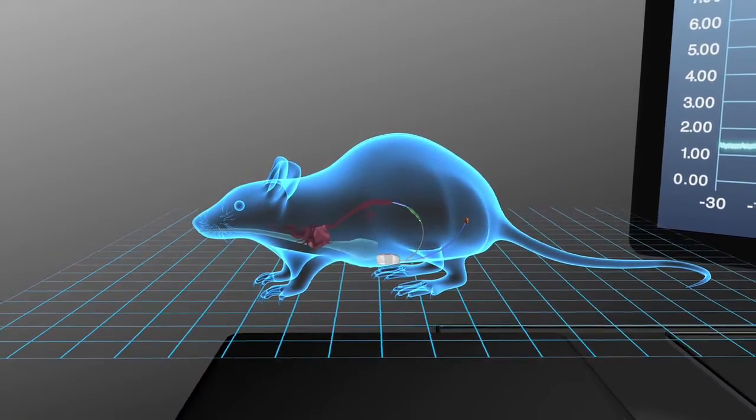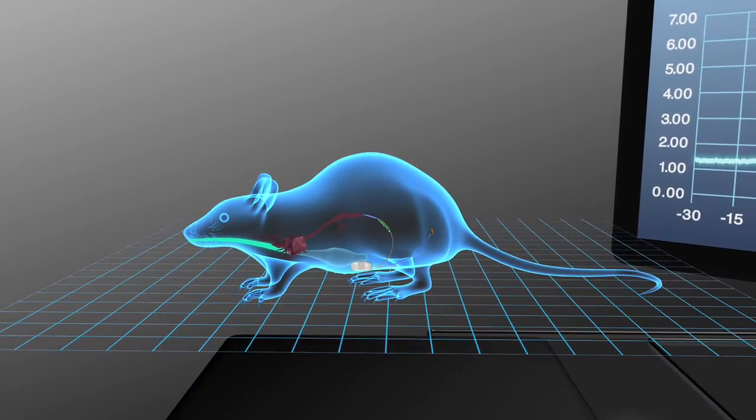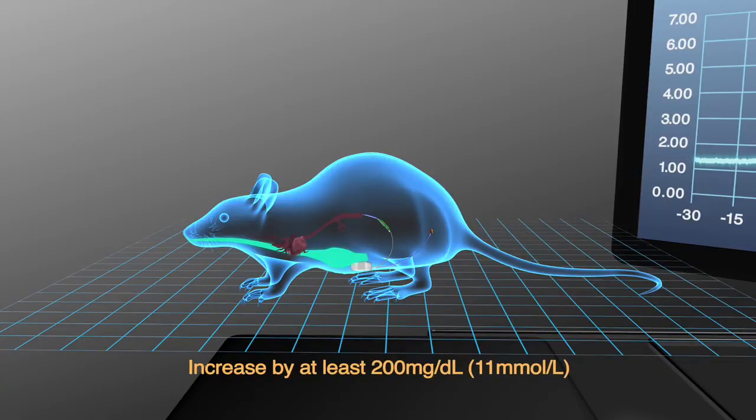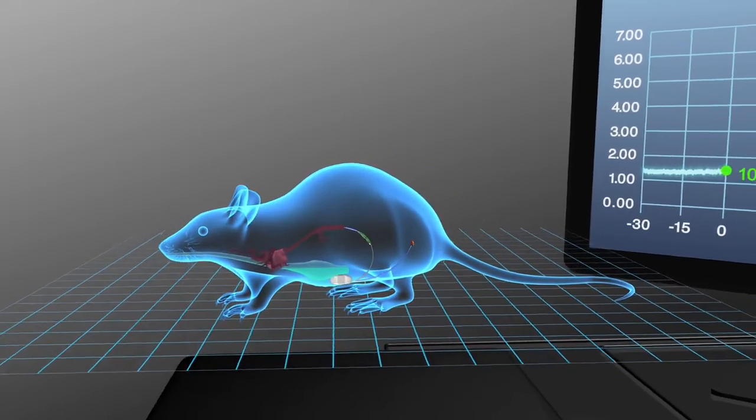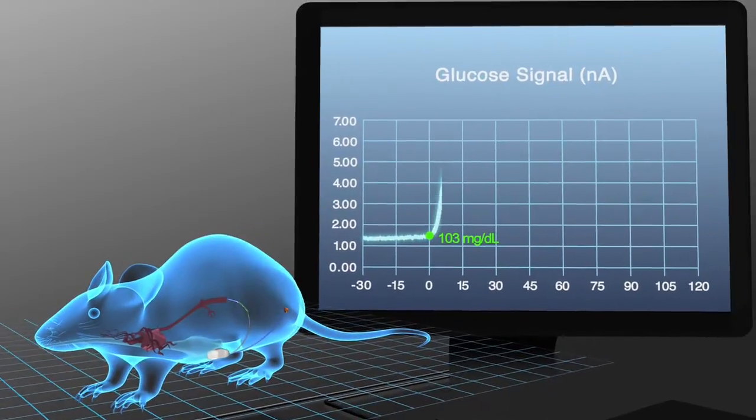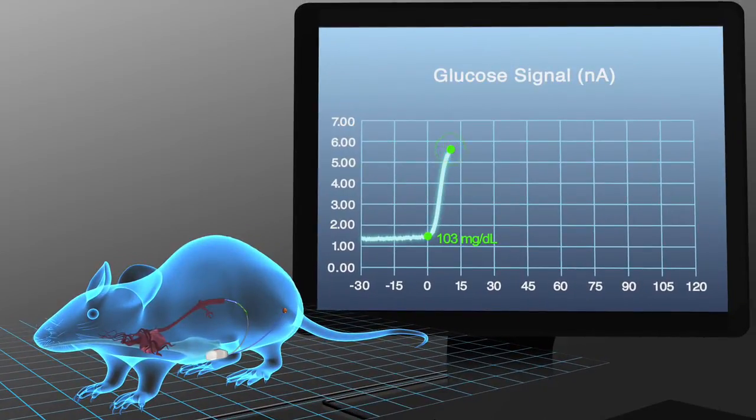Increase the animal's blood glucose level with an oral glucose administration. Observe the telemetry glucose data. The glucose level will peak approximately 12 to 16 minutes post-dose.